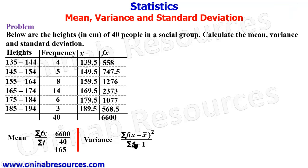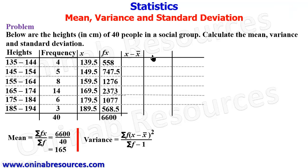So what we do here now: we have gotten our x̄. X̄ means the mean of this distribution. We are going to create more columns to accommodate (x - x̄), then (x - x̄)², then multiplying (x - x̄)² by f. So we have the first one: (x - x̄), next is squaring this: (x - x̄)², and the next is multiplying this by the frequency: f(x - x̄)². Starting from here, our x̄ is 165, so 139.5 minus